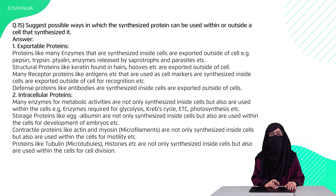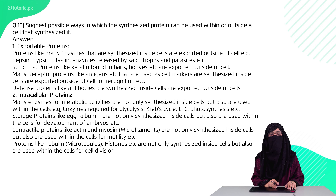Question 15 is: suggest the possible ways in which synthesized protein can be used inside or outside of the cell that synthesized it. There are exportable proteins and intracellular proteins. Exportable proteins are exported from one cell to another and are used elsewhere, while intracellular proteins are involved in metabolic reactions within the cell. With this, our short questions are complete. Thank you.